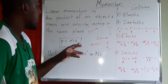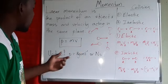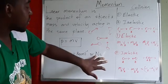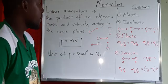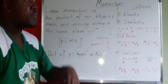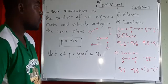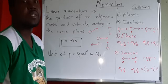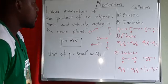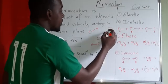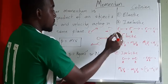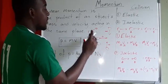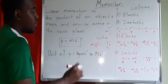Momentum is given by p equals mv, where m is your mass and v is your velocity. The unit for mass is kilograms, and v is measured in meters per second, which can also be expressed as newton-seconds. Velocity is a vector quantity, meaning it takes its direction into account. If an object is going down, it has a negative velocity; going to the right is a positive velocity.